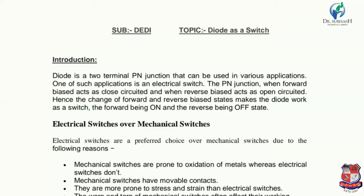When a diode is forward biased it turns ON, and when it is reverse biased it turns OFF. Electrical switches are preferred over mechanical switches. Electrical switches are a preferred choice over mechanical switches due to the following reasons.